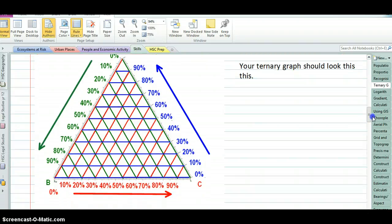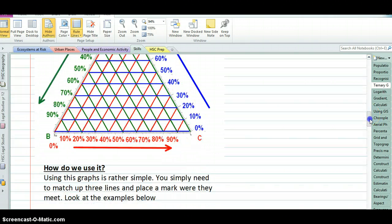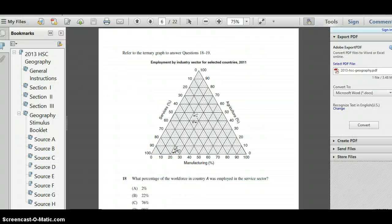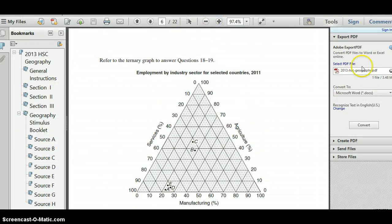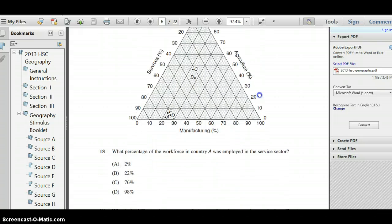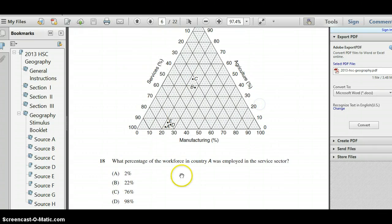If we put it all together, we read it just like this, moving in the anti-clockwise direction. Let's have a little look at how this might work in the exam. In 2013, this was the question. What percentage of the workforce in country A, so country A is marked here, was employed in the service sector?